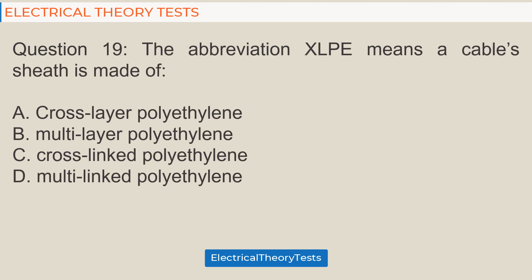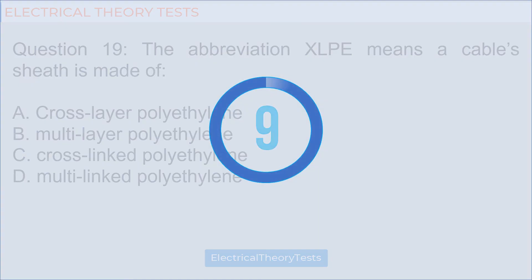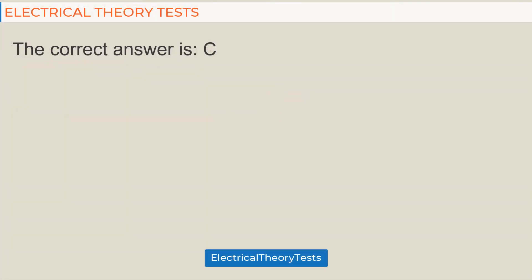Question 19: The abbreviation XLPE means a cable's sheath is made of: A: Cross-layer polyethylene, B: Multi-layer polyethylene, C: Cross-linked polyethylene, D: Multi-linked polyethylene. The correct answer is C.